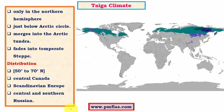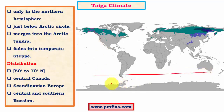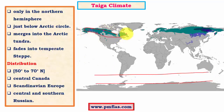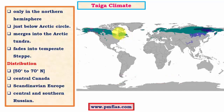The Taiga type of climate occurs within fifty to seventy degrees north of the equator. In the southern hemisphere there is no significant landmass in these latitudes — that is, fifty to seventy degrees south — and hence this climatic region is absent there. The important regions with Taiga climate are central Canada, parts of Alaska, the Labrador region of Canada, and the Siberian region of Russia.